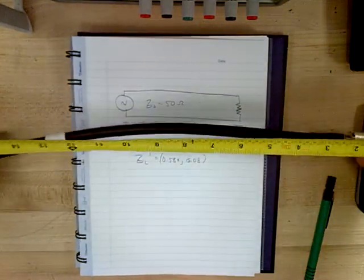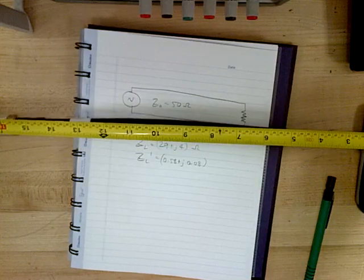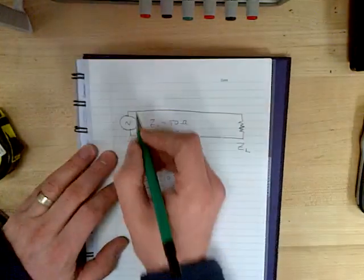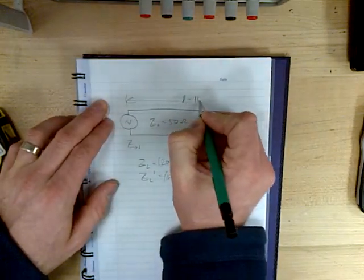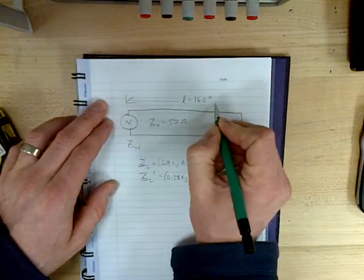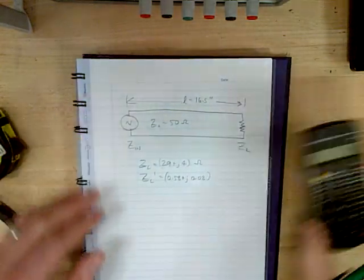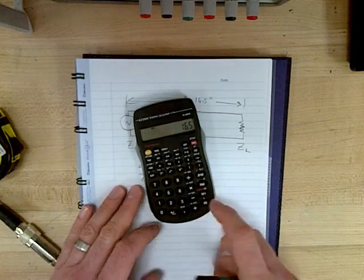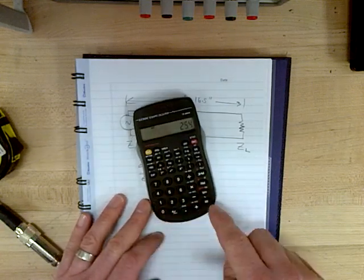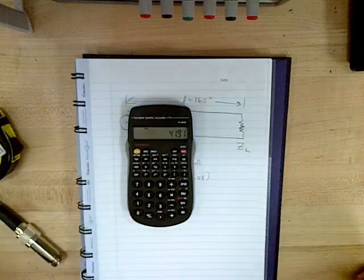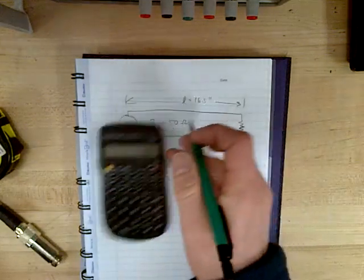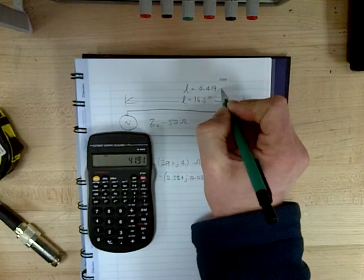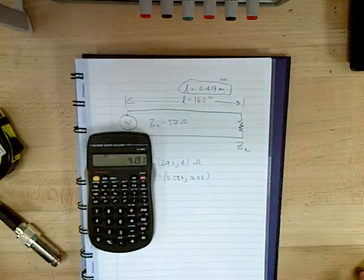So if I measure the length of this cable, I get 16.5 inches. Okay. So I say here, length equals 16.5 inches. So if I say 16.5 inches times 2.54, that's how many centimeters it is. 41.91 centimeters. So length equals 0.419 meters. That's fine.